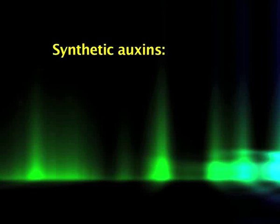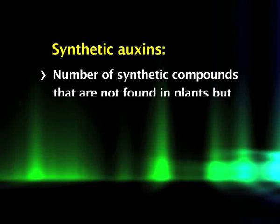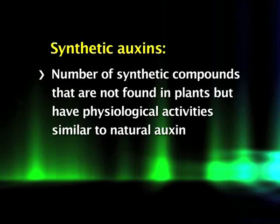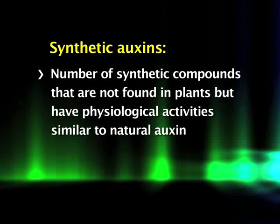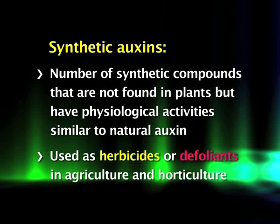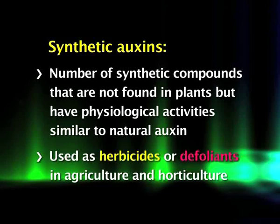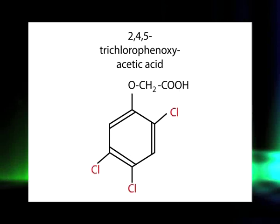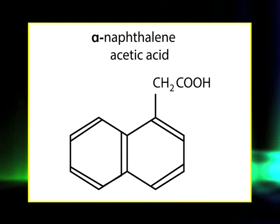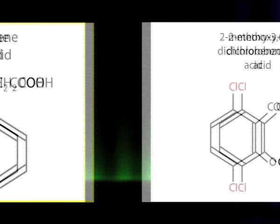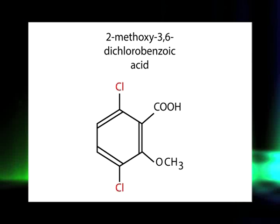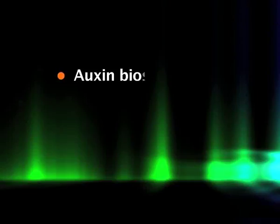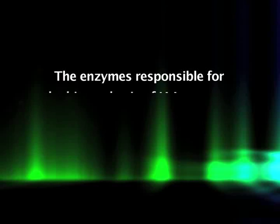A number of molecules have been synthesized in laboratories that are not found in plants but have physiological activities similar to natural auxin IAA. These are referred to as synthetic auxins. Most synthetic auxins are used as herbicides or defoliants in agriculture and horticulture. Synthetic auxins include: 2,4-dichlorophenoxyacetic acid (2,4-D); 2,4,5-trichlorophenoxyacetic acid (2,4,5-T); alpha-naphthalene acetic acid (α-NAA); 2-methoxy-3,6-dichlorobenzoic acid (dicamba); and 4-amino-3,5,6-trichlorophenoxyacetic acid (picloram).